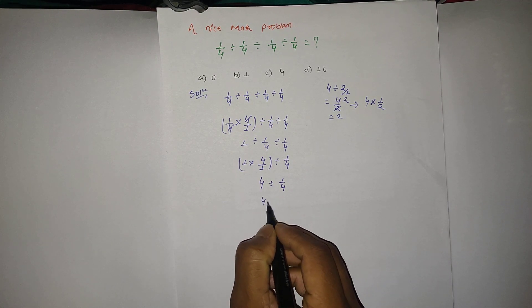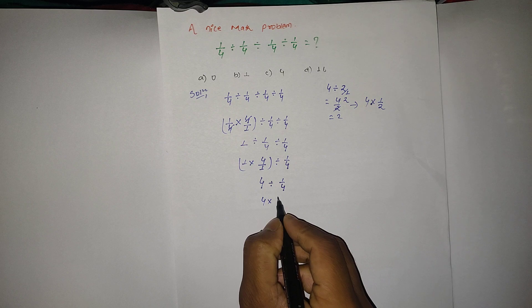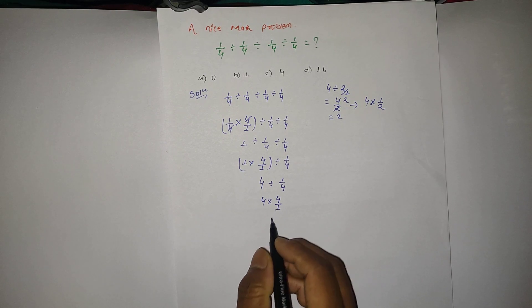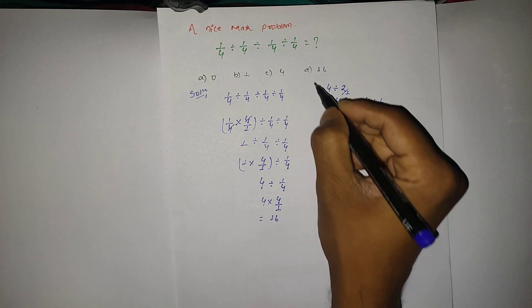If I change this divide into multiplication form, then again this number will be flipped to 4/1. So 4 × 4 is 16, divided by 1 is 16. So our final answer is 16.